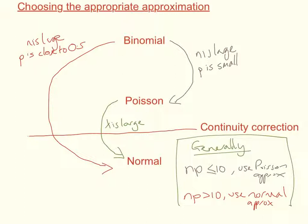Remember that if you're going from a binomial to a normal you need to apply the continuity correction. The same applies going from Poisson to normal — you need the continuity correction. But binomial to Poisson requires no continuity correction, as both are discrete distributions whereas the normal is a continuous distribution.